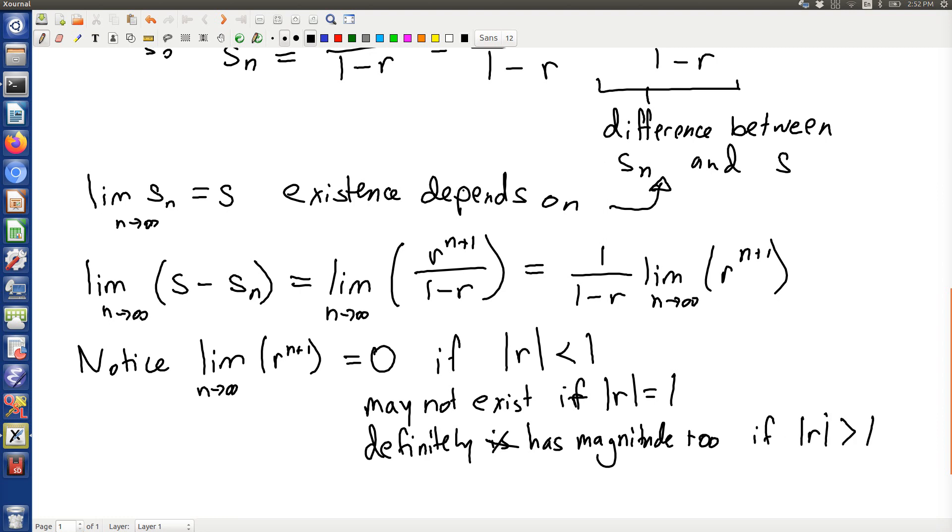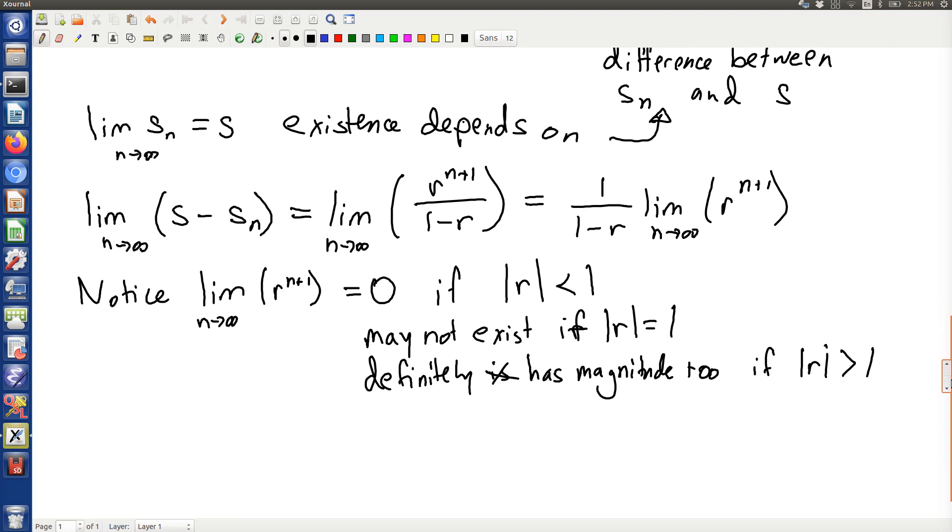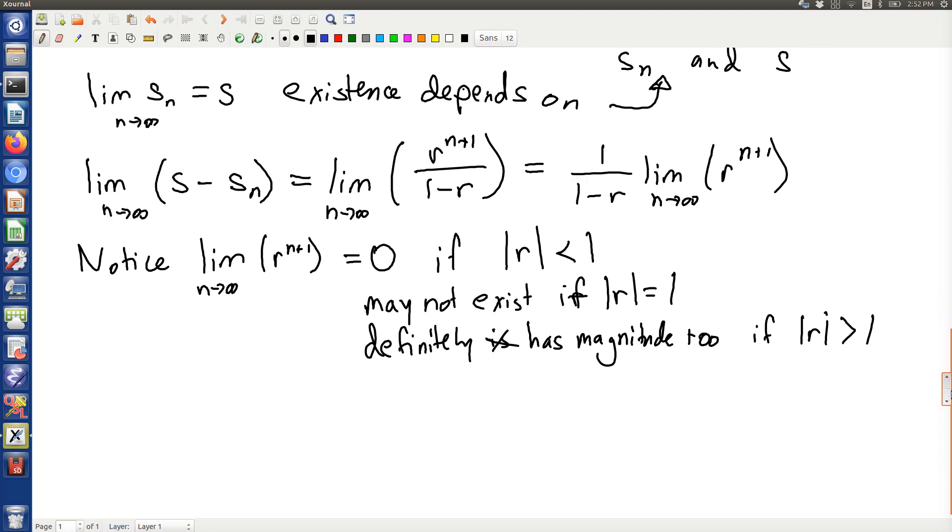And there's some equivocation there about what happens when r is equal to 1 in magnitude. Because, for instance, if you're asking for r to equal the complex number 1, i.e. the real number 1, then you'll have a situation where it equals infinity, because you're just adding up a whole bunch of 1s in your series. But if you put a negative 1, you end up with an alternating sequence of 1s and minus 1s. And that doesn't exist. No limit there.